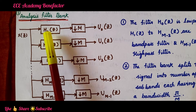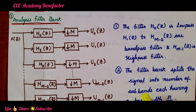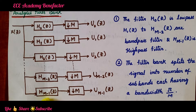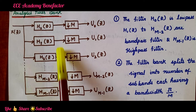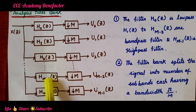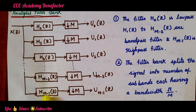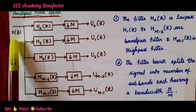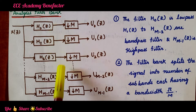Here, h0(z) is a low pass filter. h1(z) through h(m-2)(z) are bandpass filters, and h(m-1)(z) is a high pass filter. This filter bank comprises a low pass filter, a bank of bandpass filters, and a high pass filter. The filter bank splits the input signal into a number of sub bands, each having a bandwidth of π/m.